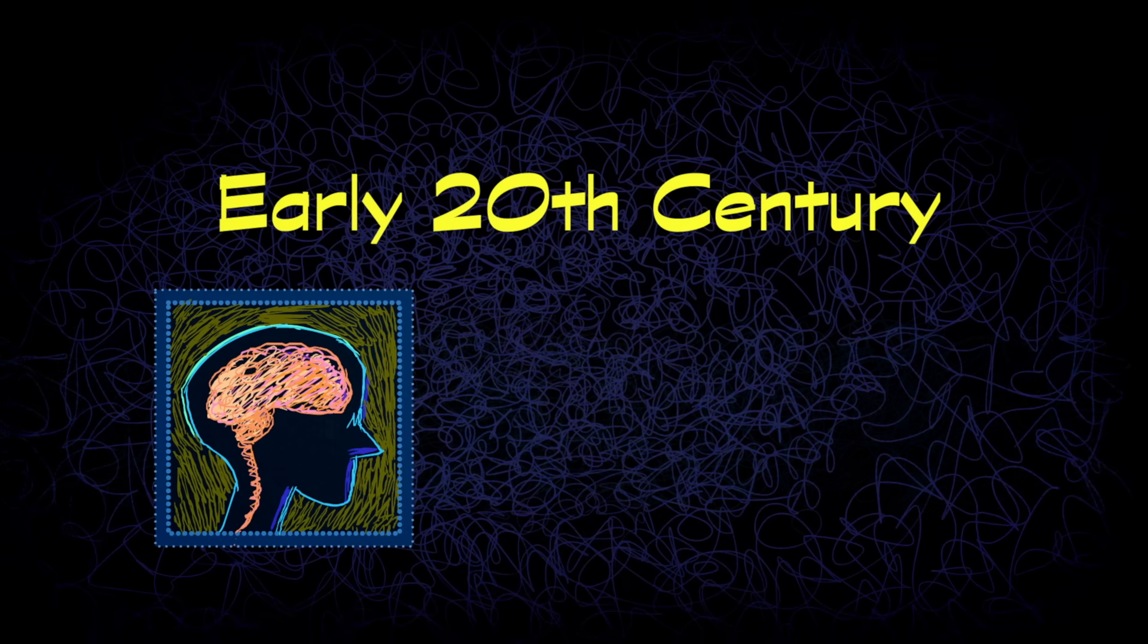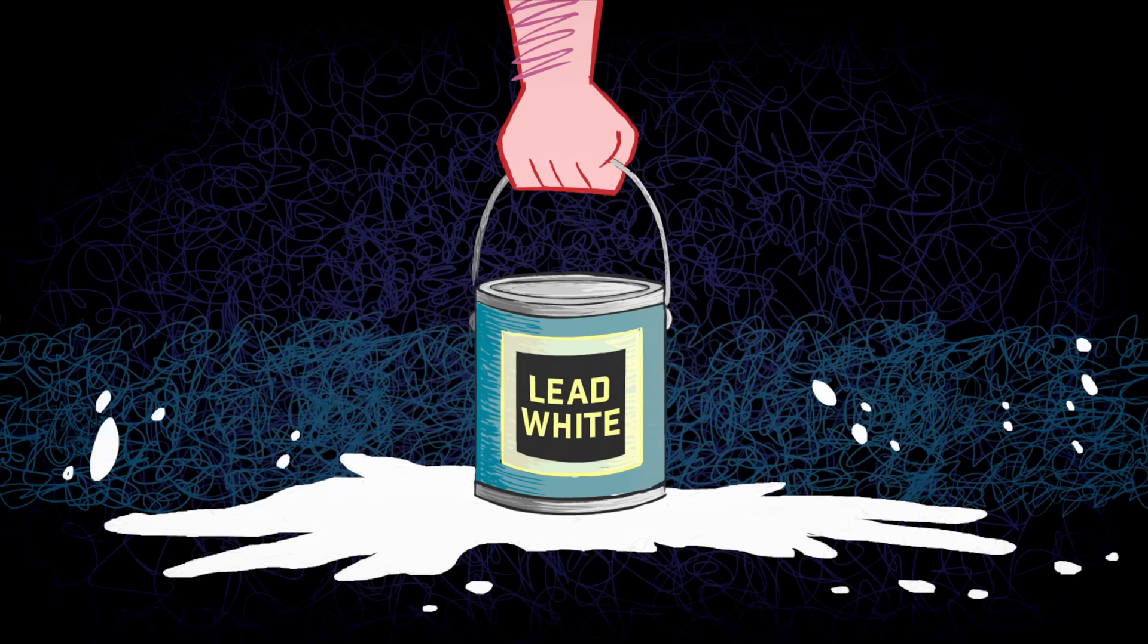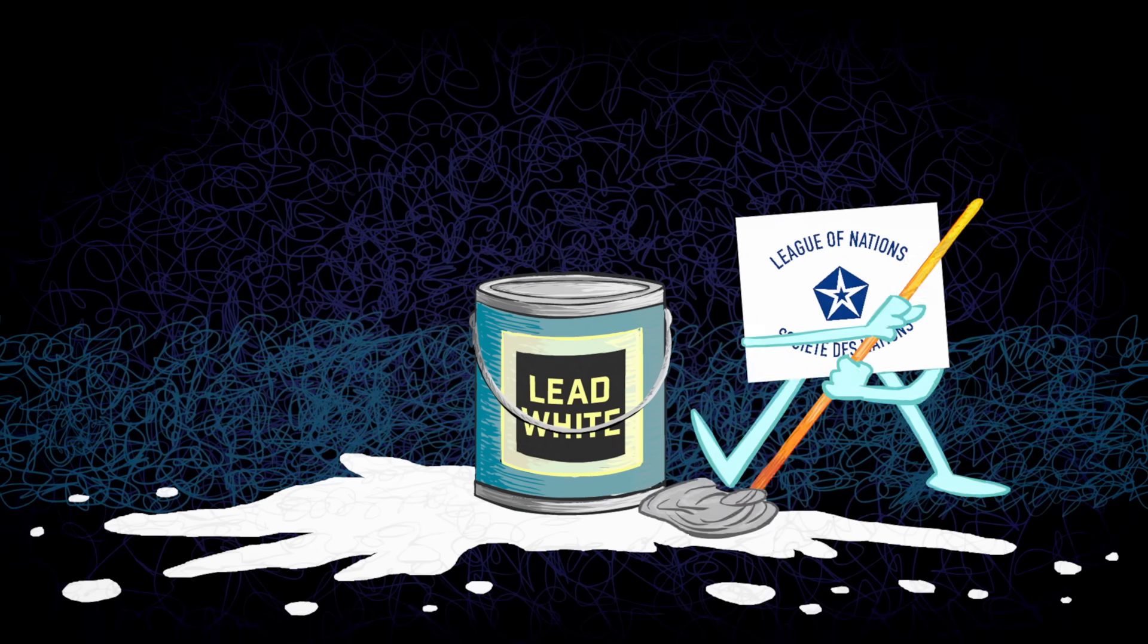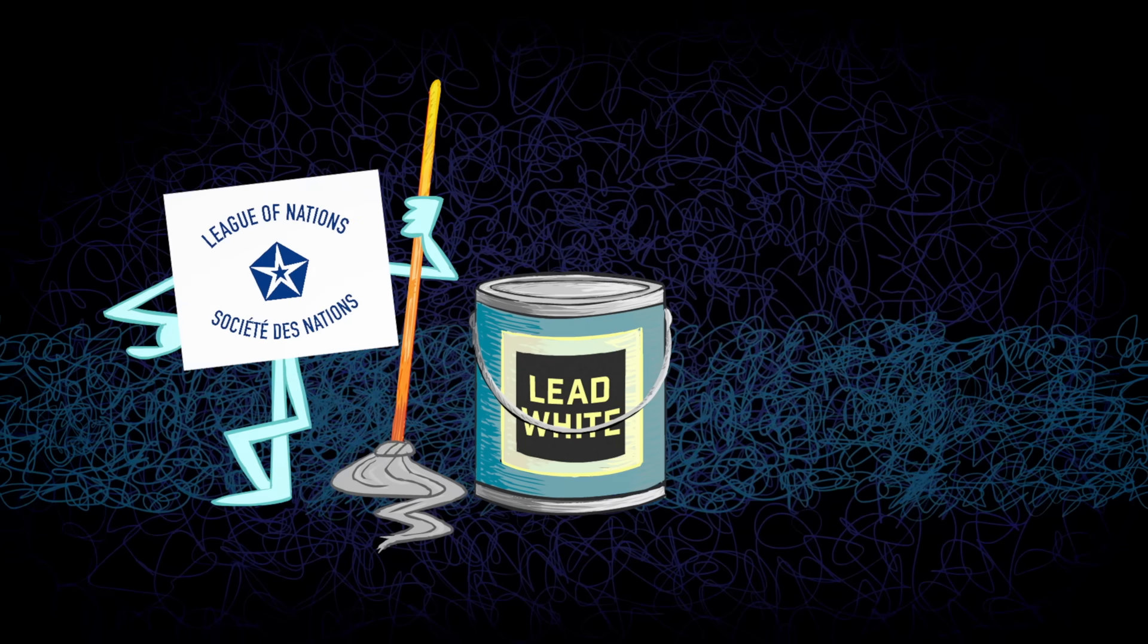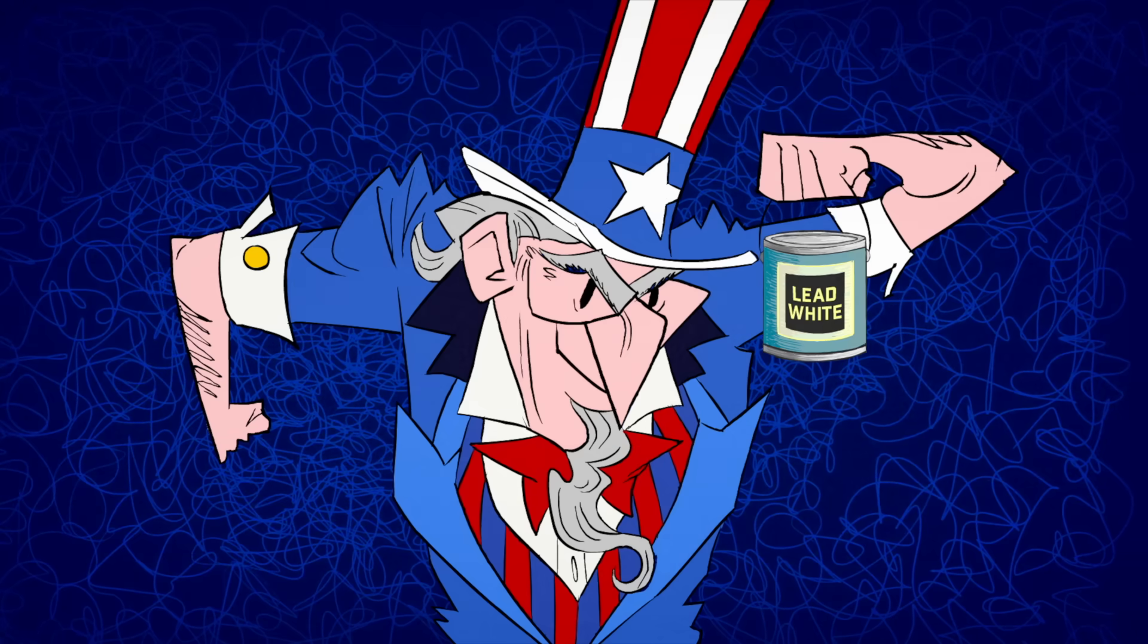By the early 20th century, there were widespread reports of brain damage, convulsions, and death among children who inhaled or ingested lead, most often from paint. In 1921, the League of Nations passed lead paint restrictions, which were enacted in many countries. But the U.S. never joined the League of Nations.